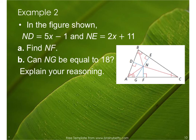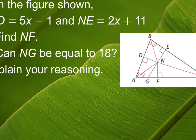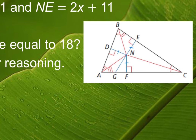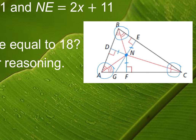Example two: in the figure shown, Nd equals 5x minus 1 and Ne equals 2x plus 11. Find Nf. The reason I know all of those are congruent is because this is our incenter — each of the red lines is an angle bisector to the three angles of the triangle. Since Nd equals Ne, we substitute: 5x minus 1 equals 2x plus 11.